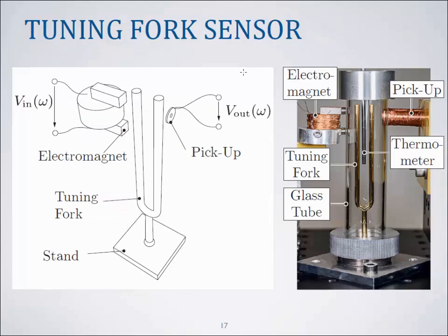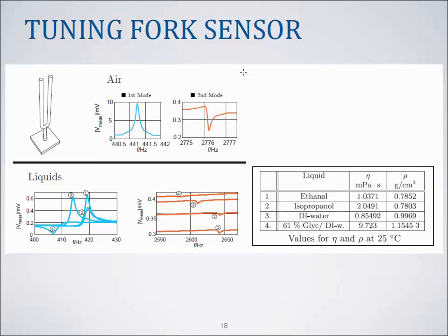The first sensor which was investigated is the tuning fork sensor which consists of a steel tuning fork depicted on the right hand side. The steel tuning fork is actuated by an electromagnet at one side of the tuning fork and read out via electrodynamic pickup which consists of just a permanent magnet in the center of a wound coil.